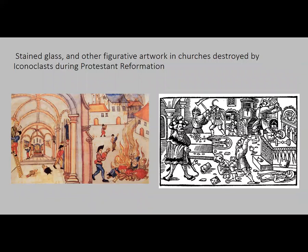During the Reformation, when Protestant sects were forming, the more evangelical Protestants did not believe in icons — they thought people were worshipping saints instead of Jesus and God. So they went into churches and not only destroyed sculptures but also broke up a lot of stained glass. During that period, in order to save their stained glass, many Catholic churches would hide it along with their icons so it wouldn't get destroyed. Some has survived because it was hidden, but a lot was broken.